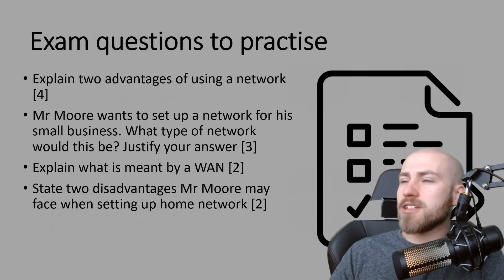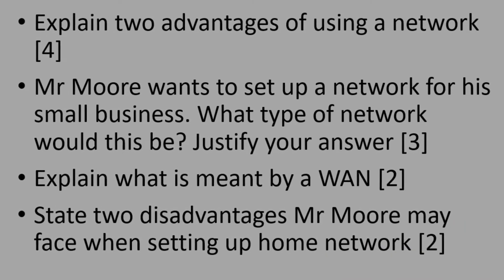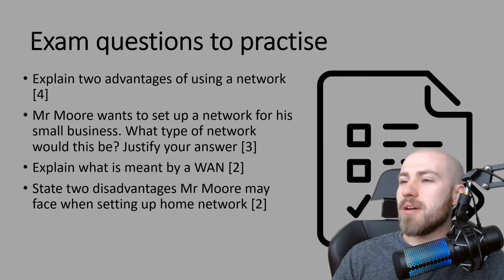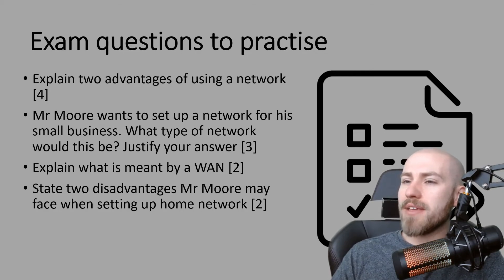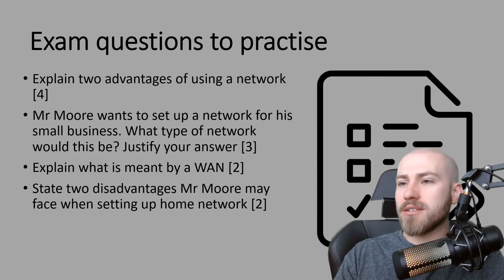Here are some exam questions to practice. First: explain two advantages of using a network. Second: Mr. Moore wants to set up a network for his small business — what type of network would this be? Justify your answer. Third: explain what is meant by a WAN. Fourth: state two disadvantages Mr. Moore may face when setting up a home network. Pause now to attempt these before we go through the answers.